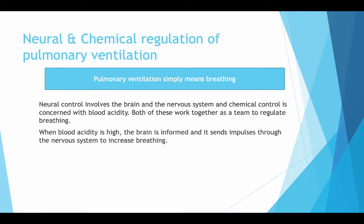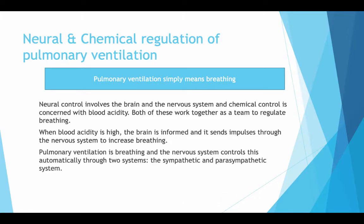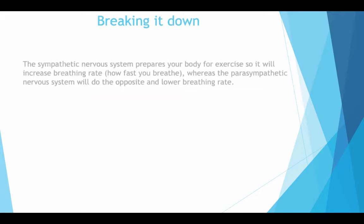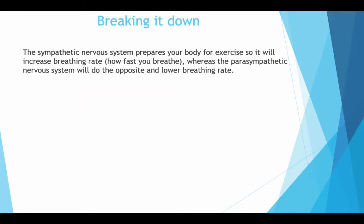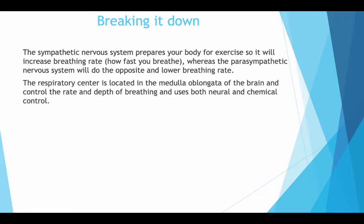When blood acidity is high, the brain is informed and sends impulses through the nervous system to increase breathing. The nervous system controls pulmonary ventilation automatically through two systems: the sympathetic and the parasympathetic system. The sympathetic nervous system prepares the body for exercise and increases breathing rate, whereas the parasympathetic nervous system does the opposite and lowers the breathing rate. The respiration centre is located in the medulla oblongata of the brain and uses both neural and chemical control.